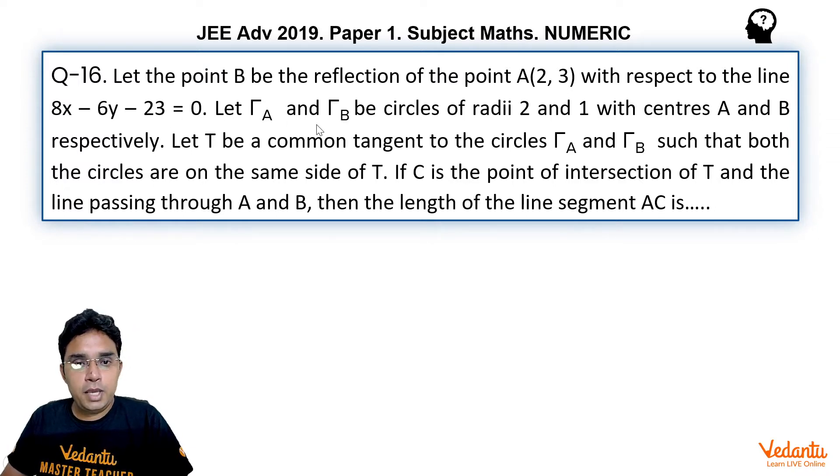Let tau A and tau B be circles of radius 2 and 1 with centers A and B respectively. Let T be a common tangent to the circles tau A and tau B such that both the circles are on the same side of T. If C is the point of intersection of T and the line passing through A and B then length of line segment AC is.